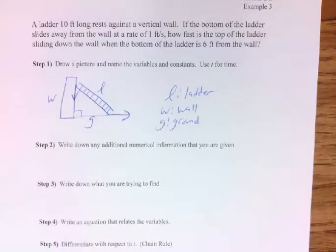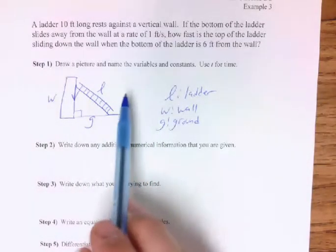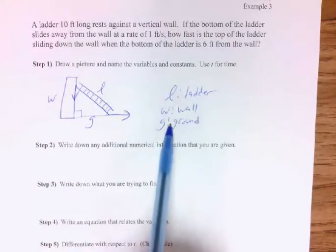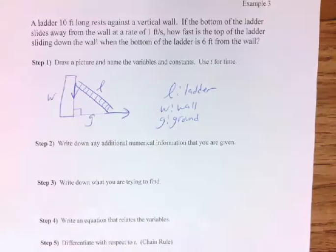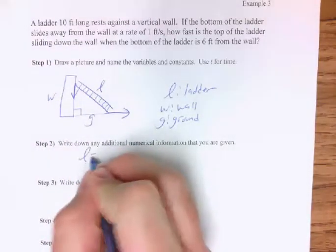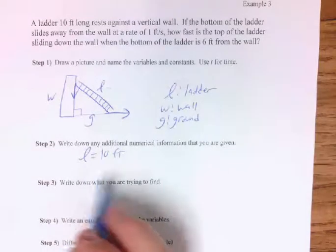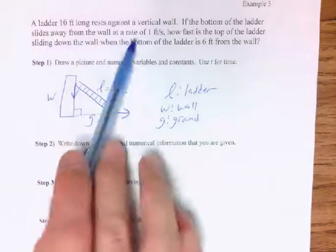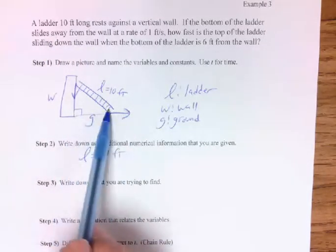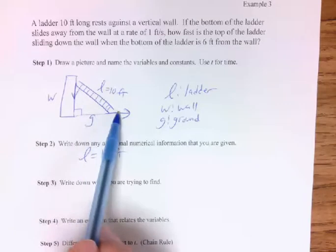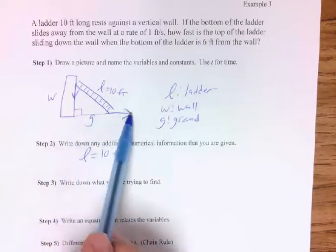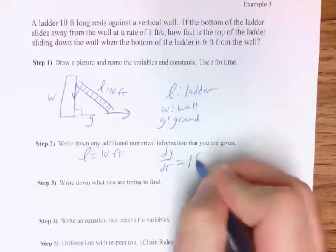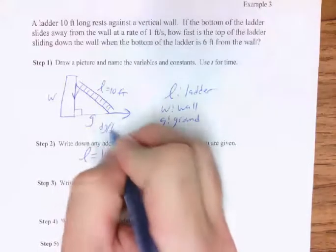We know we have a right triangle. I'll use L for ladder, W for wall, G for ground. The ladder is 10 feet long, so L = 10 feet. The rate at which the bottom extends out is dG/dt = 1 foot per second. The ladder slides away when the bottom is 6 feet from the wall, so G = 6. We're trying to find how fast the top is sliding down — that's dW/dt.